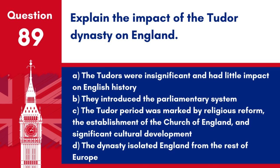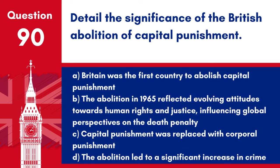Question 89: Explain the impact of the Tudor dynasty on England. a. The Tudors were insignificant and had little impact on English history. b. They introduced the parliamentary system. c. The Tudor period was marked by religious reform, the establishment of the Church of England, and significant cultural development. d. The dynasty isolated England from the rest of Europe. Answer: c. The Tudors played a crucial role in shaping modern English society, government, and religion.